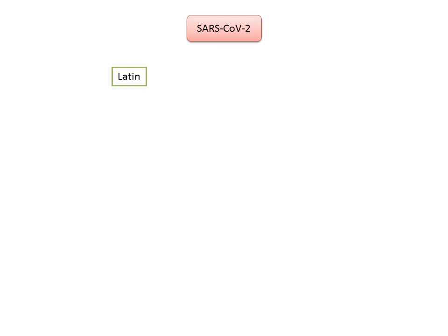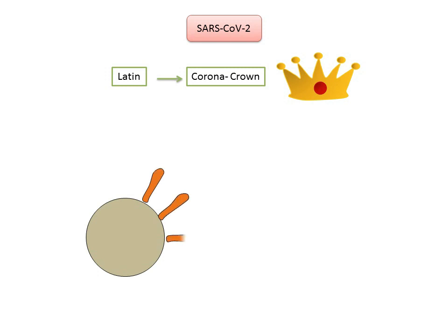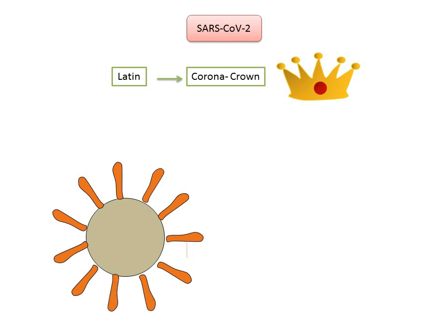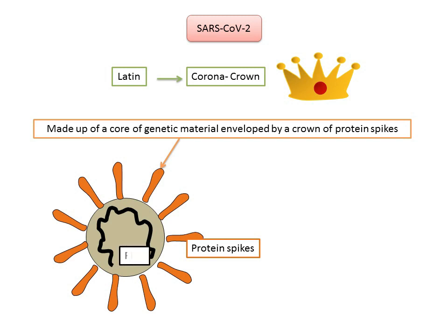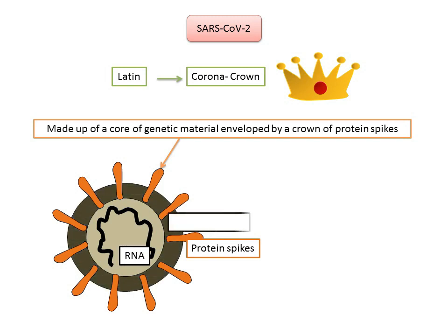The virus is named based on the Latin word corona, meaning crown. It is named so because of its appearance — it is made up of a core of genetic material enveloped by a crown of protein spikes that protrude from its surface, thus resembling a crown. SARS-CoV-2 is an RNA virus enveloped in a bubble of oily lipid and protein layer, and it is this layer which disintegrates on contact with soap, hence the recommendation of washing hands with soap as a preventive measure.